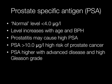Prostate specific antigen, or PSA, is a substance produced by prostate epithelial cells and it can be detected in the serum. Normally the level is less than 4 micrograms per liter in men below the age of 60. The level does increase with age, and conditions such as benign prostatic hyperplasia and prostatitis can cause the level to become high. PSA levels greater than 10 micrograms per liter indicate there is a high chance of underlying prostate cancer.